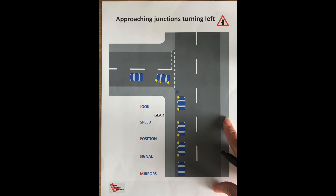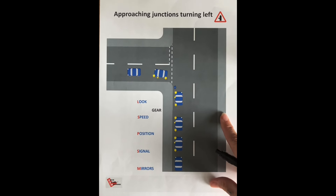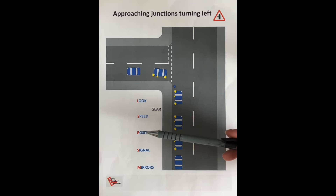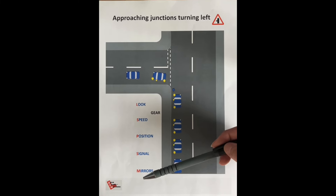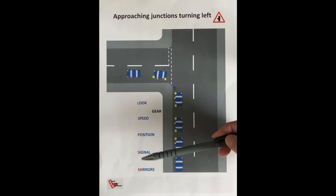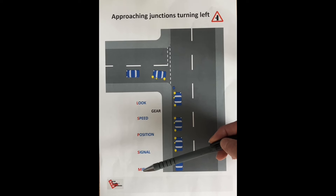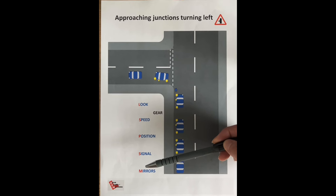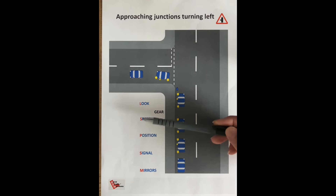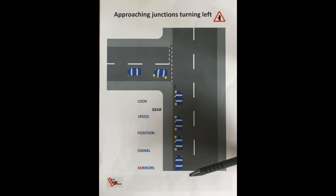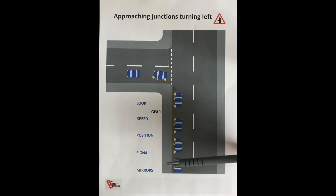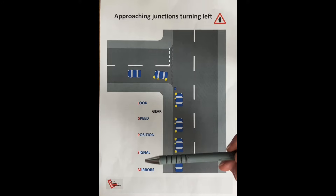The student will have already learned the system called Mirror Signal Manoeuvre. Now we're going to replace the 'manoeuvre' part with Position, Speed, and Look — so instead of Mirror Signal Manoeuvre, you now have Mirror Signal Position Speed Look. This is the most important system you're going to learn, because it applies to everything: turning left or right major to minor, T-junctions, crossroads, roundabouts, any complex junction.